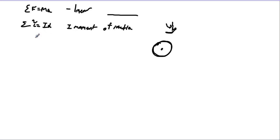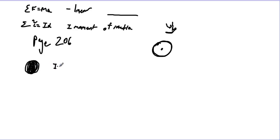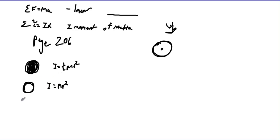The moment of inertia depends on shape and mass. On page 206 of your book there's a list, but we usually use two. For a solid disk spinning through the middle, I equals one-half MR squared. For a hollow disk like a wheel where all the mass is around the outside, I equals MR squared. This is bigger because the mass is farther from the axis of rotation. You can check the book for more.